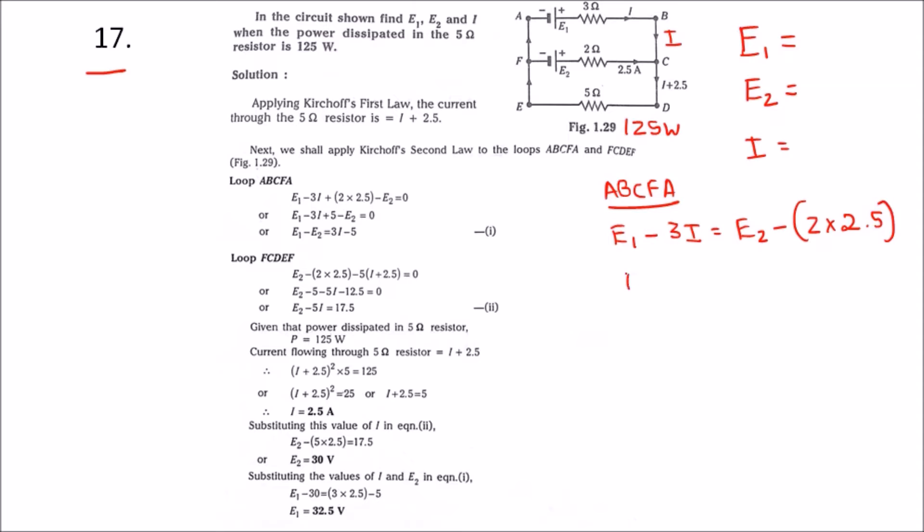We will get E1 minus E2 minus 3i is equal to 5. This will be the first equation.